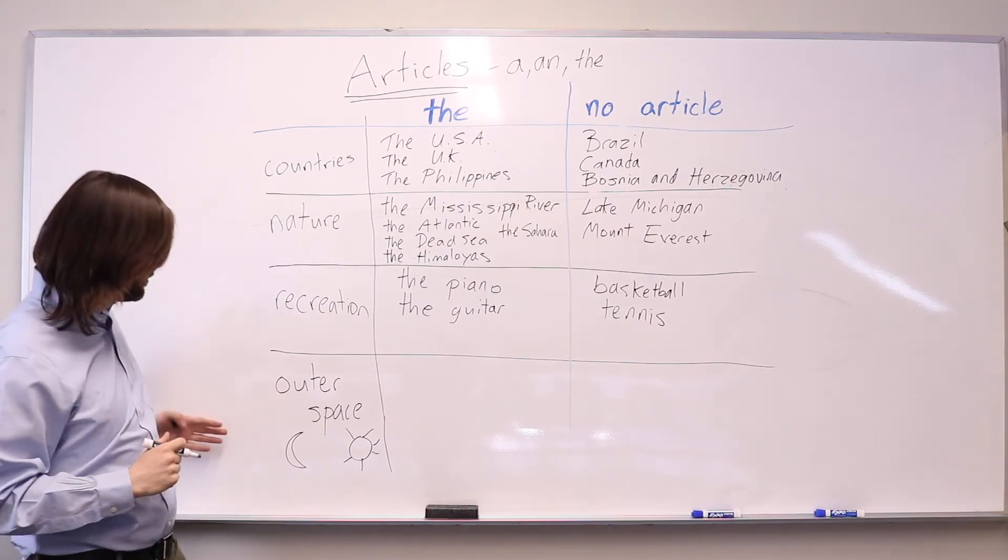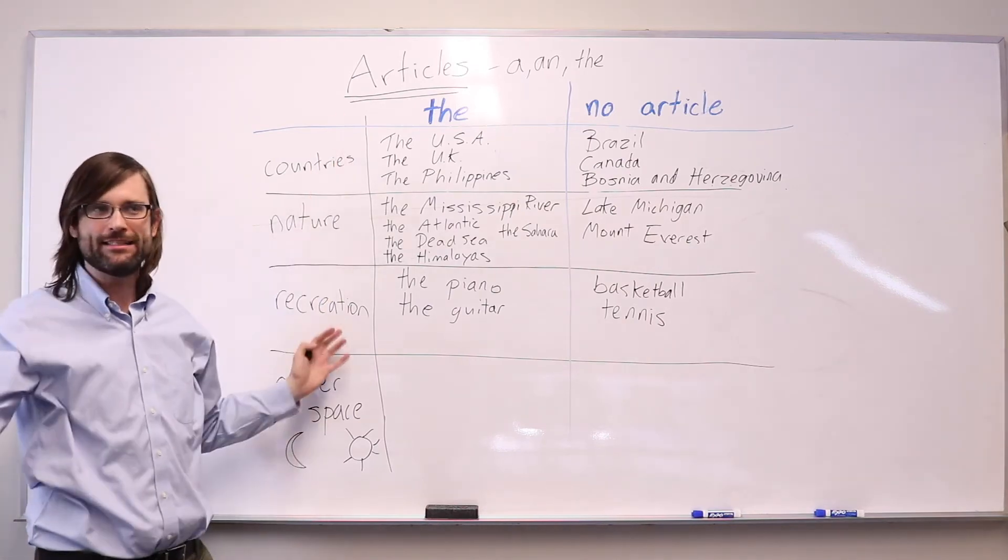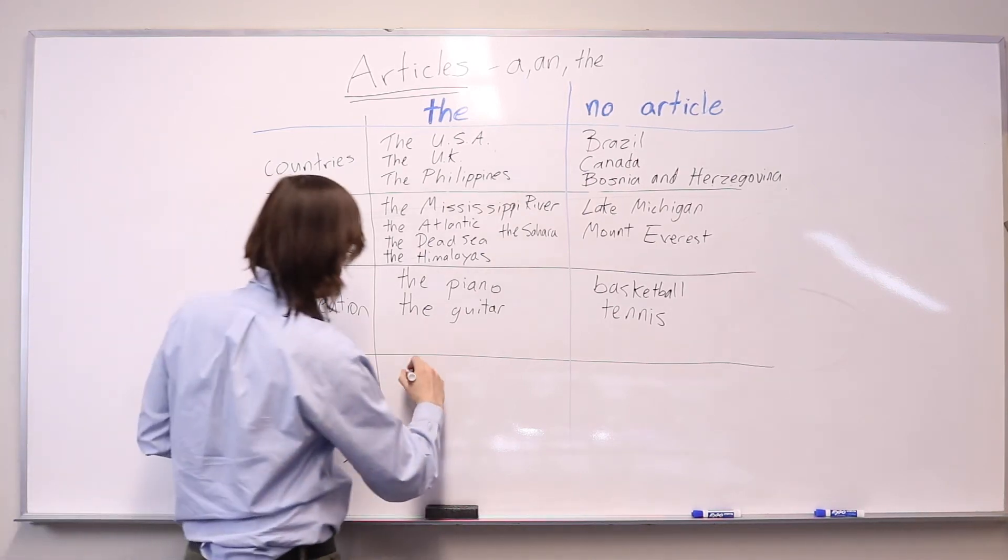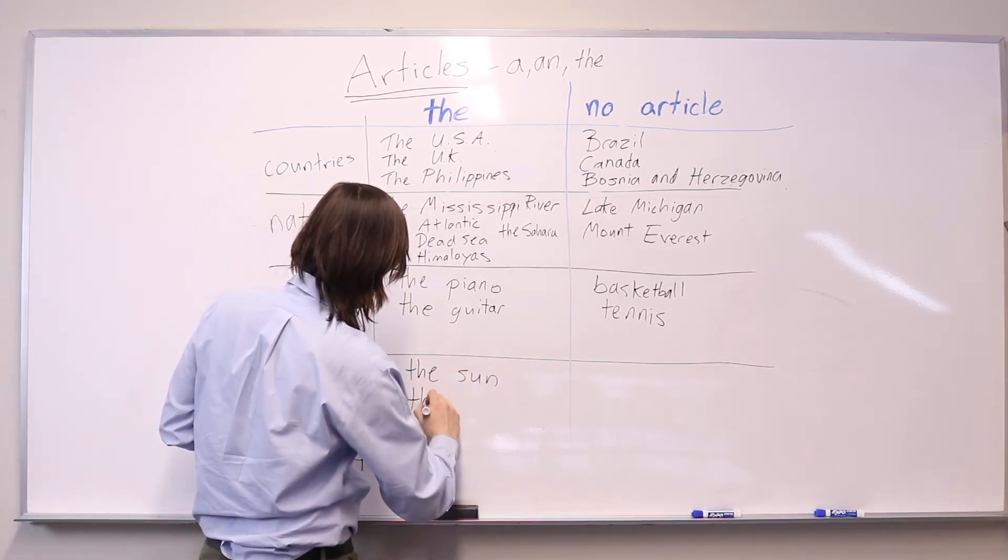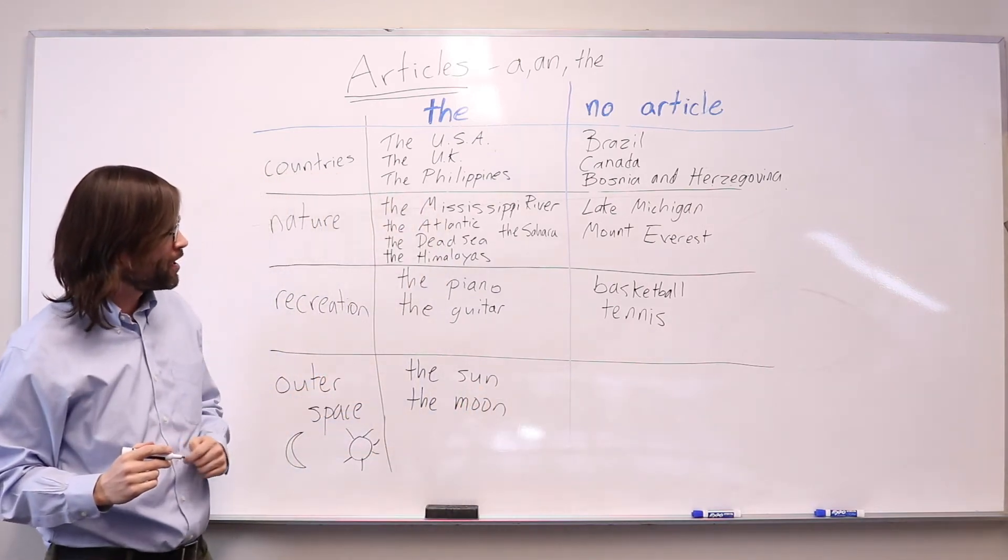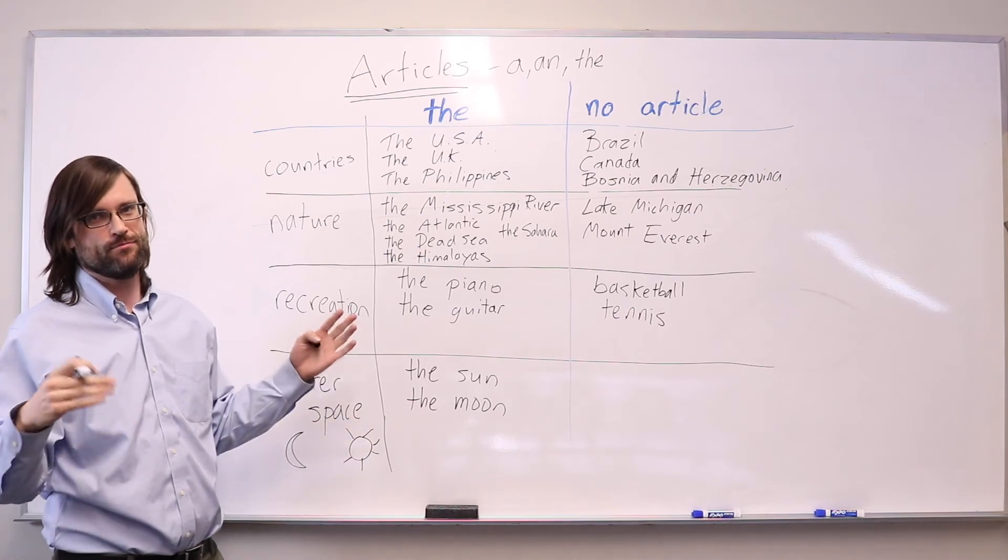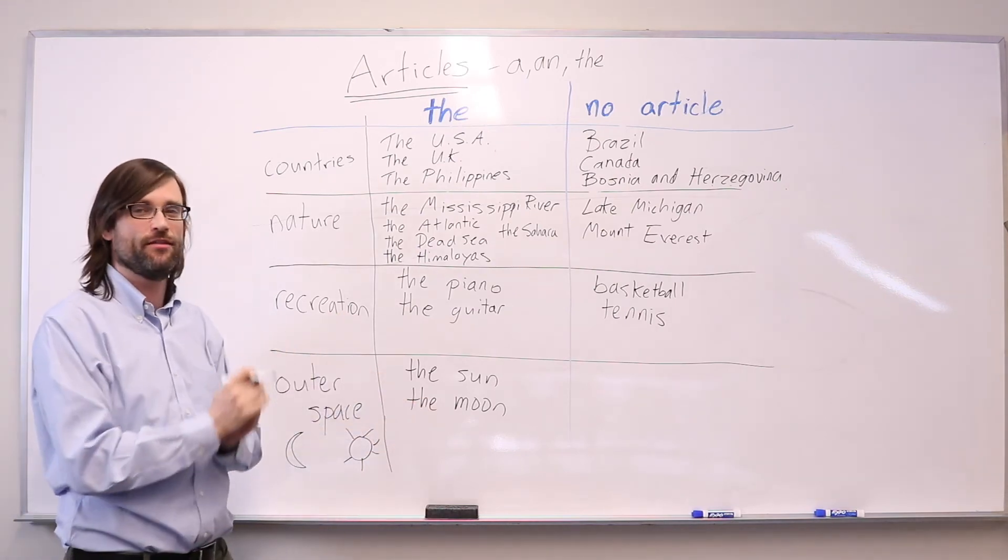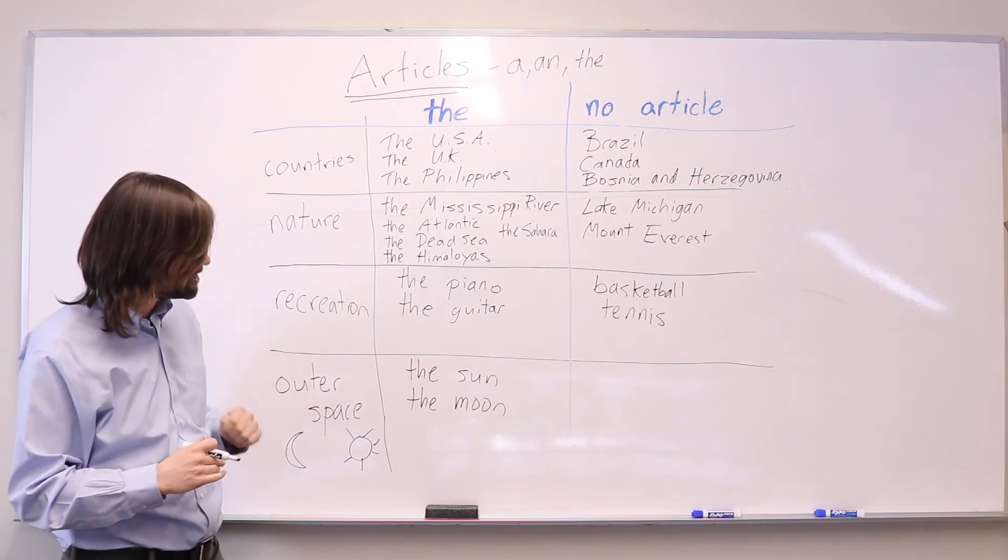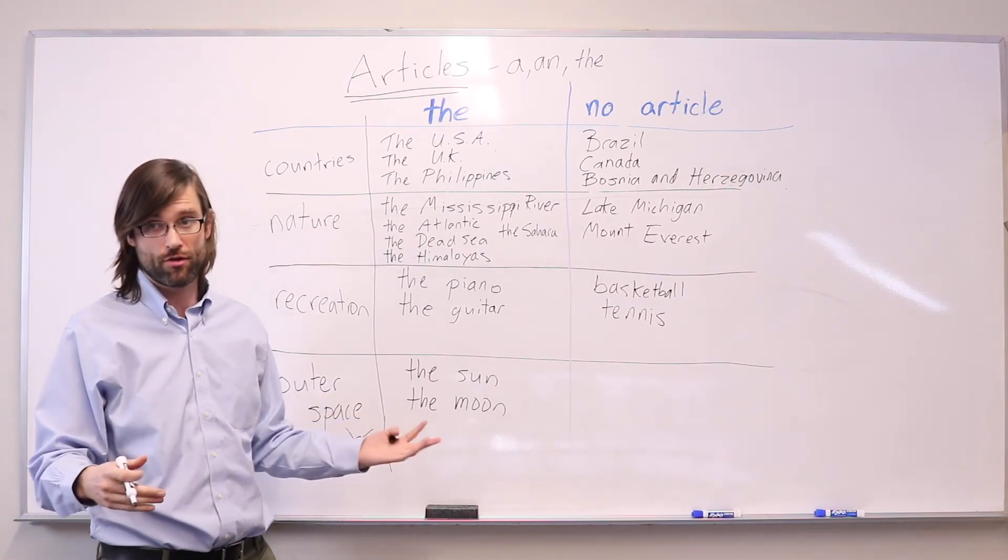Finally, when we talk about some objects in outer space, we use the for the sun and the moon. Why do we use an article here? Well, because there's only one sun, which is our sun. There are many, many stars. There are many, many moons on other planets. But if we talk about the moon, we're talking about the moon of Earth.